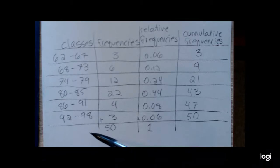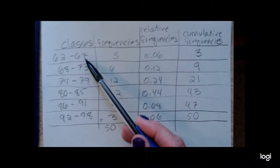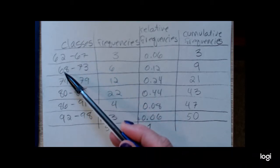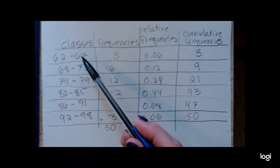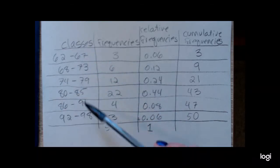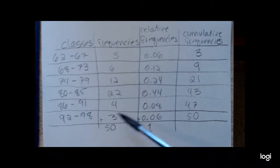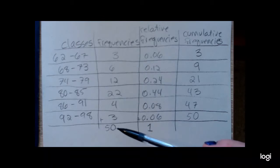That way there won't be any gaps between the bars because notice this class ends at 67, this class starts at 68. If I were to use the class limits as is, there would be small gaps between the bars. So along the horizontal axis, I'm going to be using those class boundaries instead of the classes. And for the vertical axis, I'm going to use the frequencies.